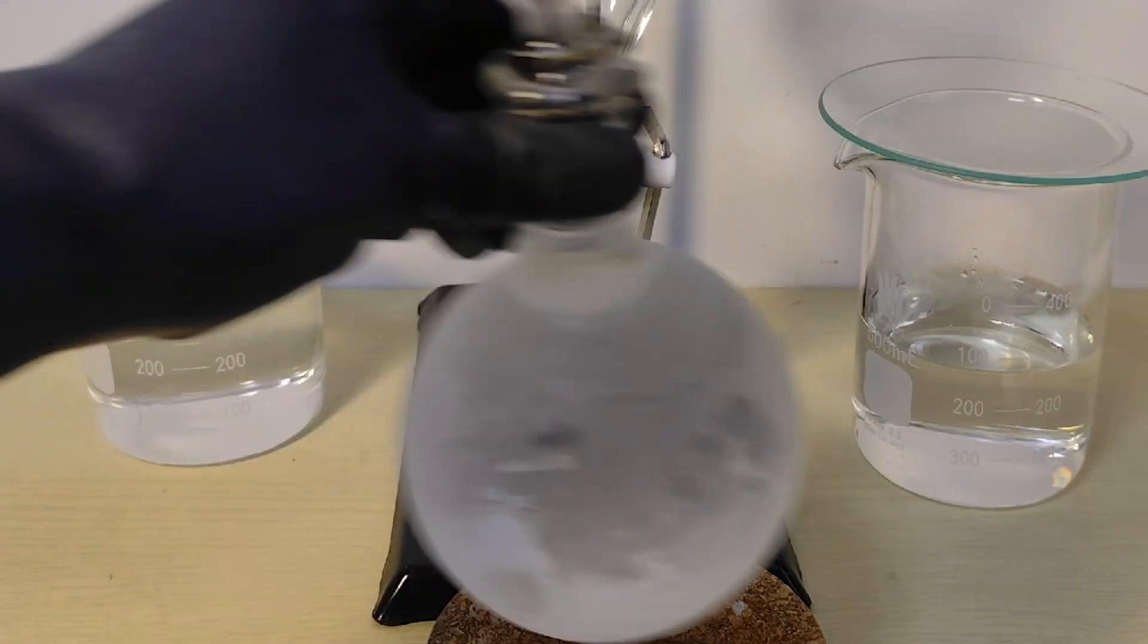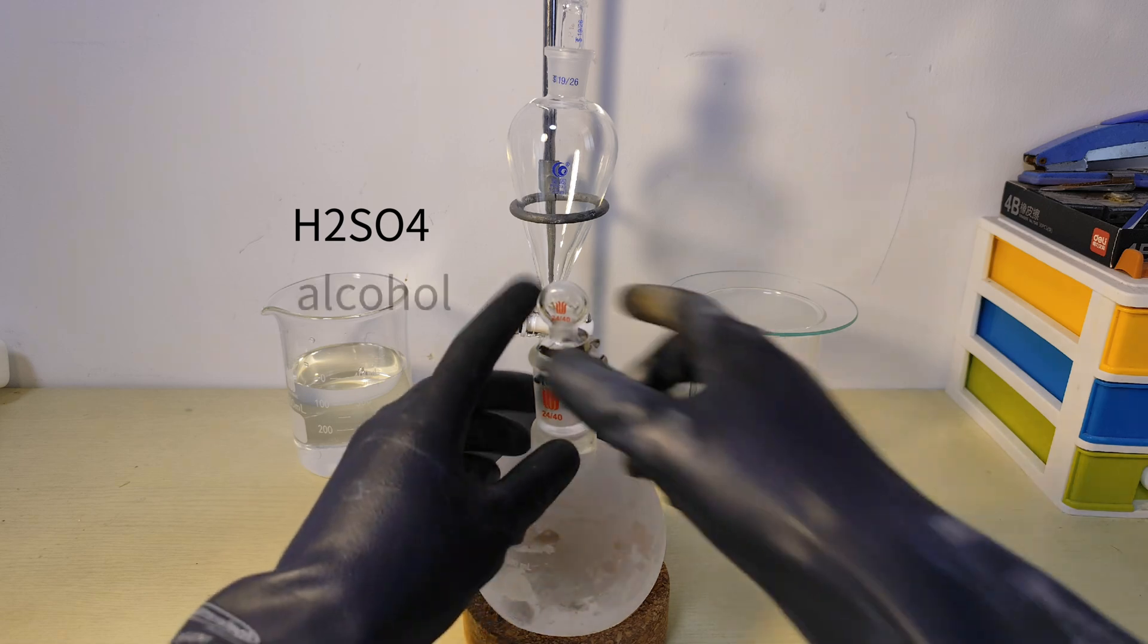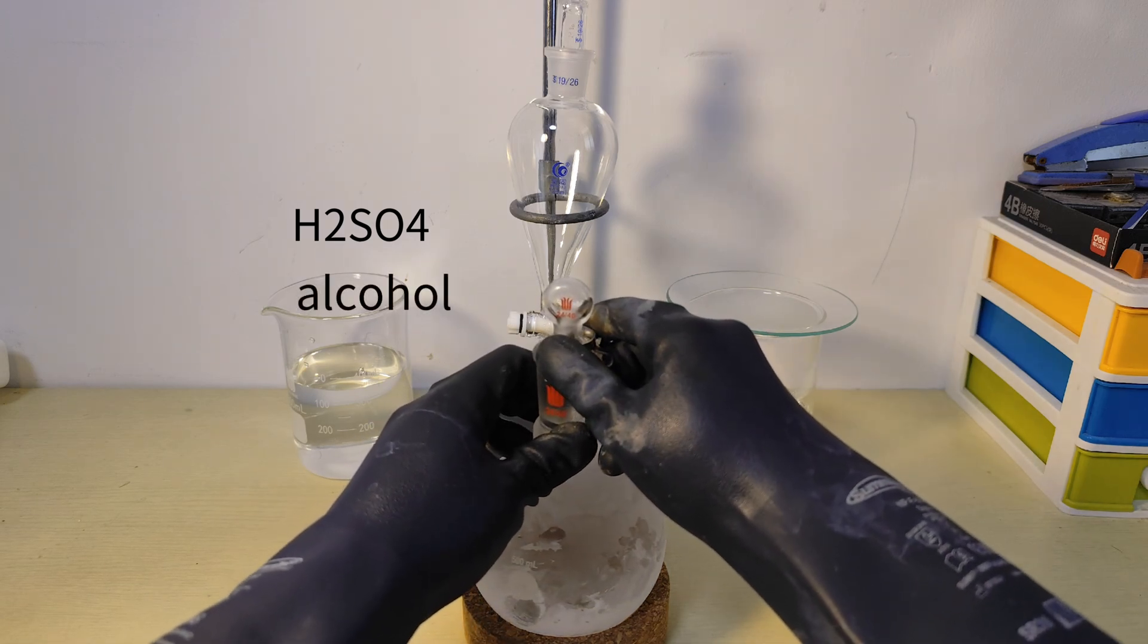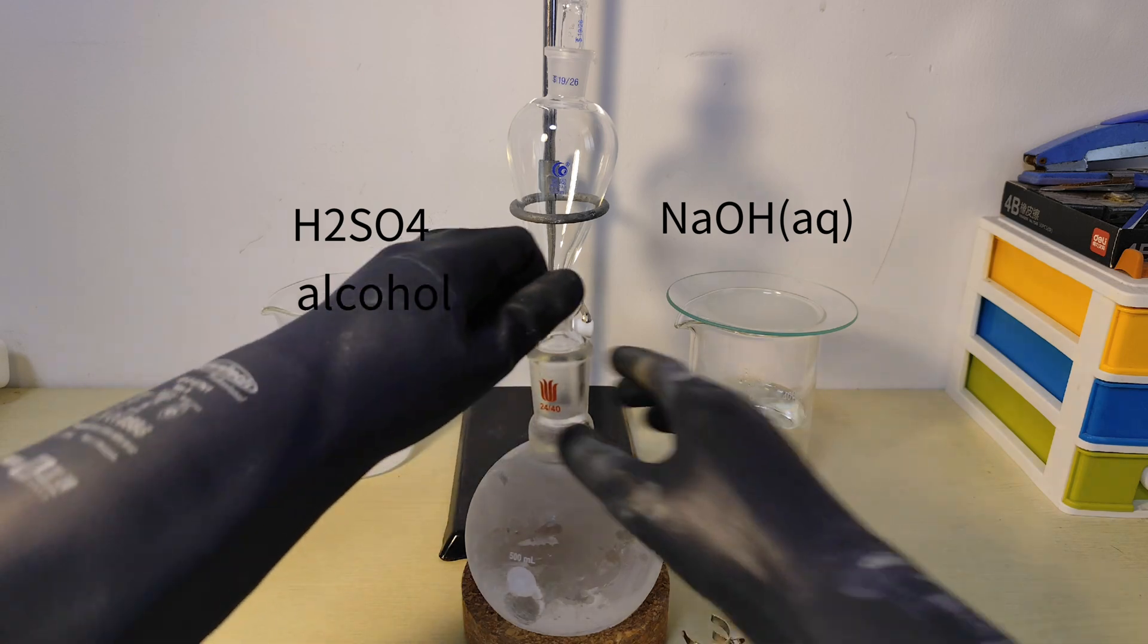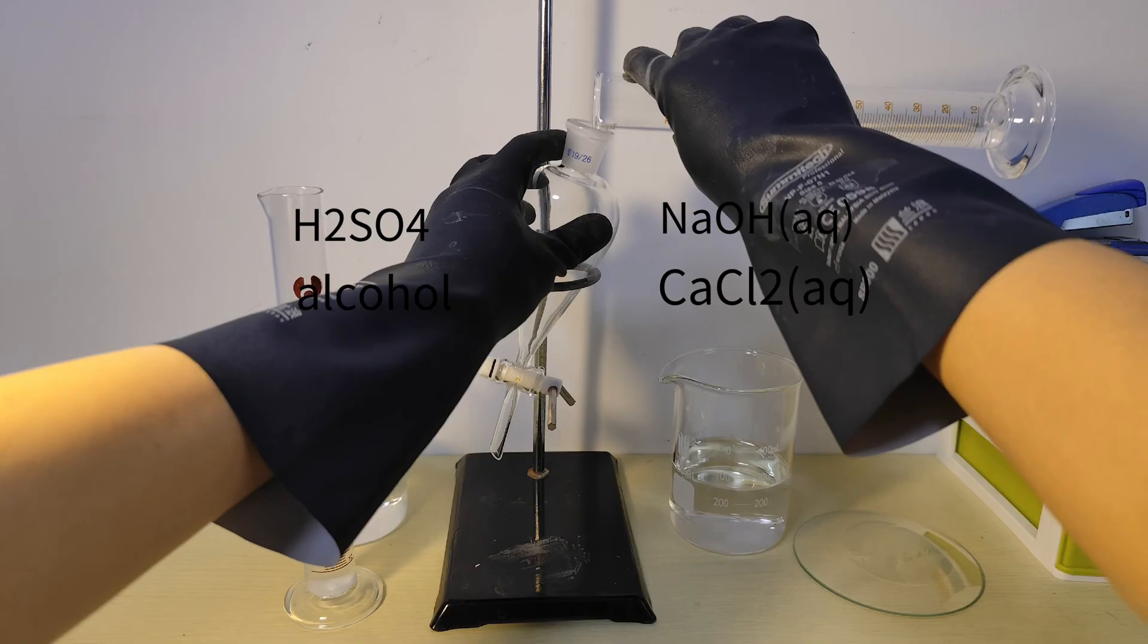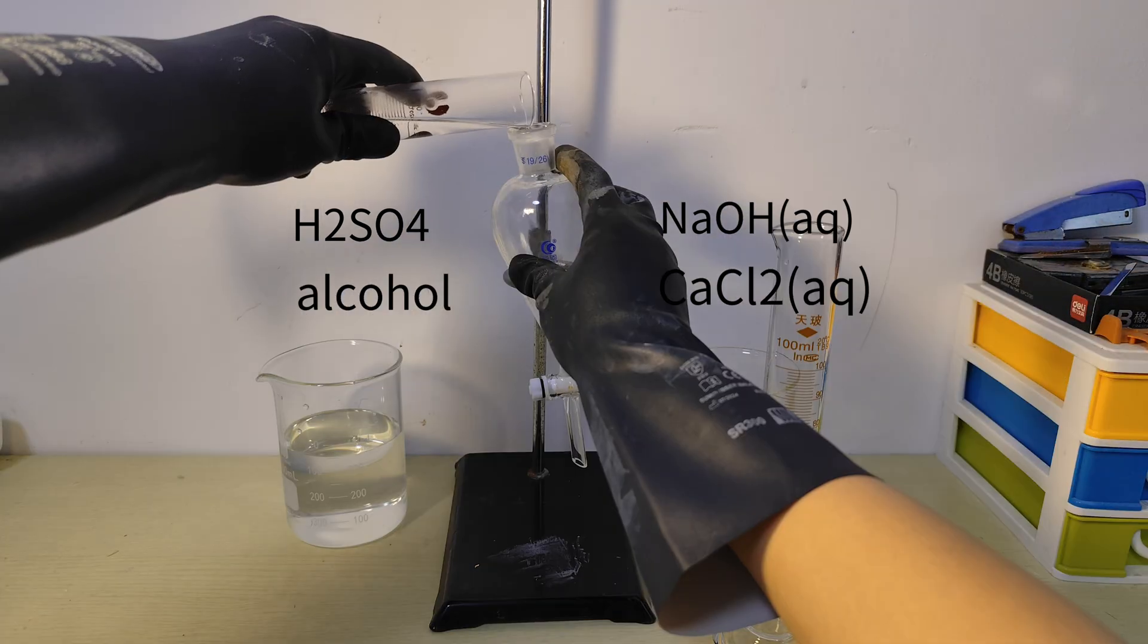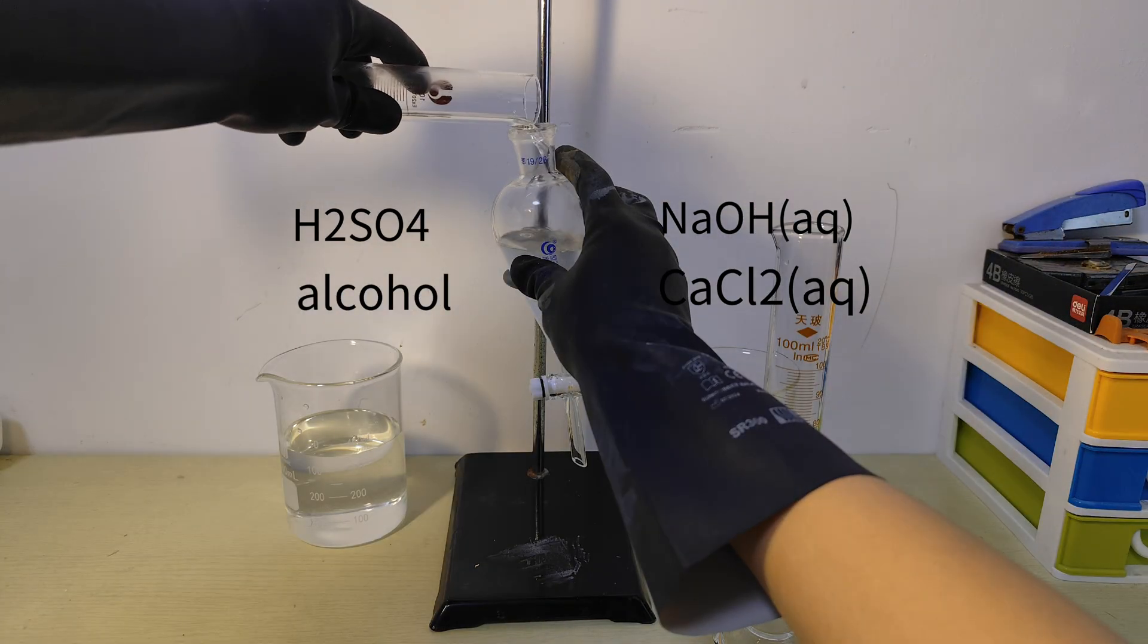The next day, what I have is some raw diethyl. The impurity in it is actually some acid and alcohol, so I just wash it with some sodium hydroxide solution and calcium chloride solution. The former one could react with the acid and produce water, while the second one can react with the alcohol and absorb the alcohol.